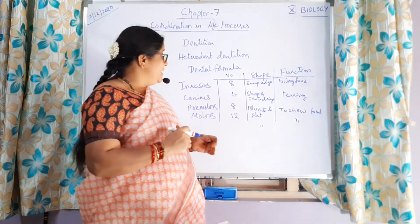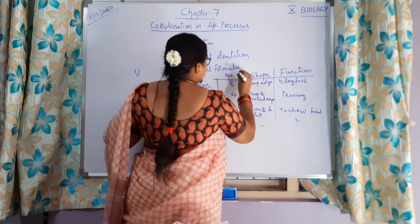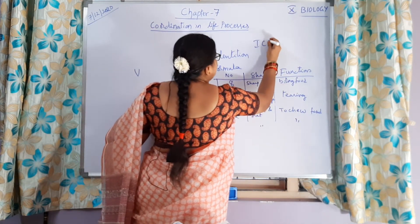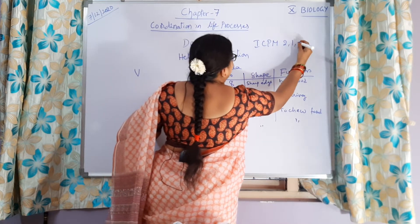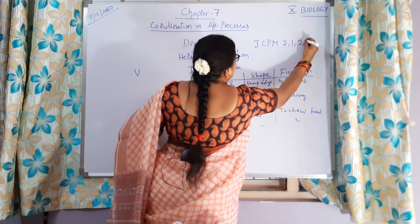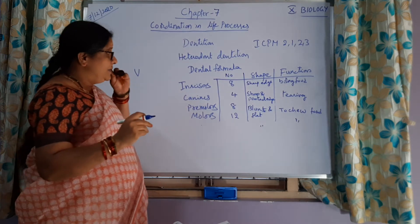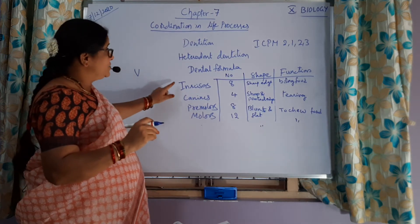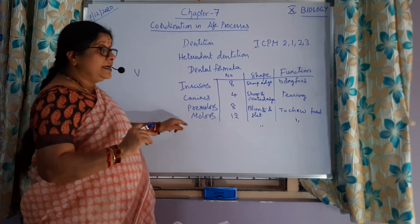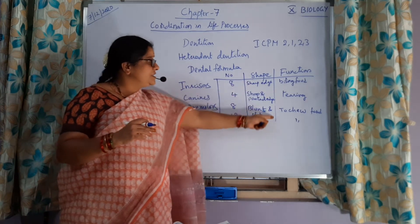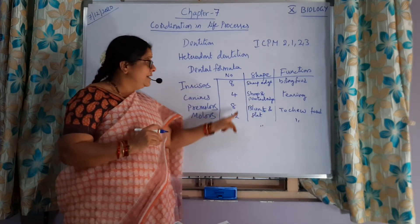The human dental formula ICPM 2-1-2-3 is very important for your exam — it will be given. These are the different types of teeth and the different functions carried out by the teeth.